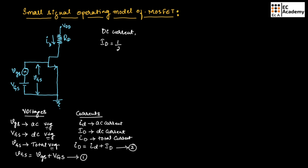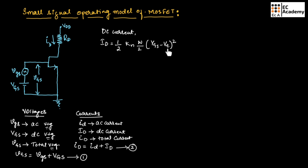We know the DC current can be given as ID = (1/2) · KN · (W/L) · (VGS − VT)², where KN is the constant, W/L is the transistor aspect ratio (width by length), VGS is the gate-to-source DC voltage, and VT is the threshold voltage. Let us call this equation number 3.